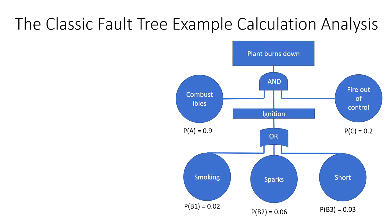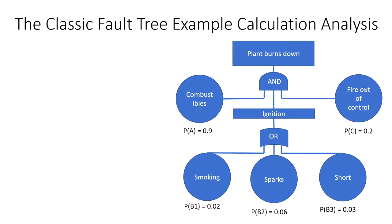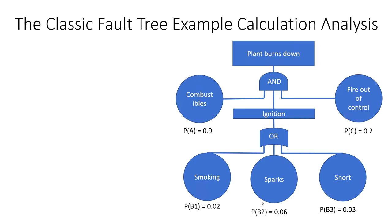There are two gate types: the OR gate and the AND gate. The AND gate requires that every input event occurs for the output event to happen. For example, you need combustible fuel sources, ignition, and enough oxygen to keep the fire going — all three things. We use the AND gate symbol for that.